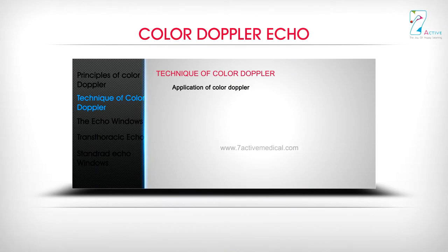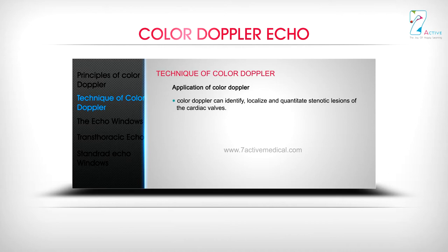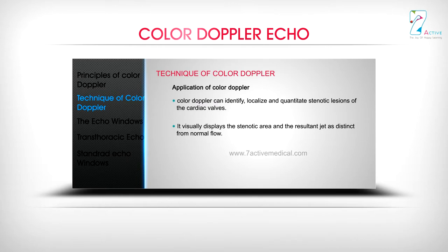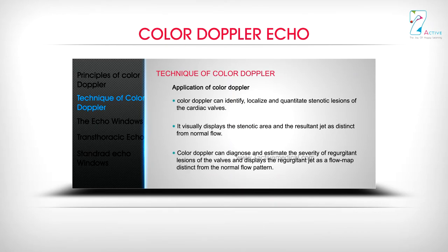Color Doppler can identify, localize, and quantitate stenotic lesions of the cardiac valves. It visually displays the stenotic area and the resultant jet as distinct from normal flow. Color Doppler can also diagnose and estimate the severity of regurgitant lesions of the valves, displaying the regurgitant jet as a flow map distinct from the normal flow pattern.